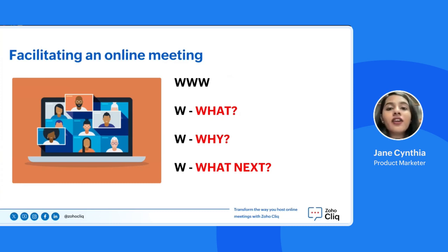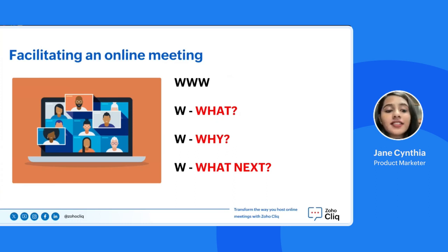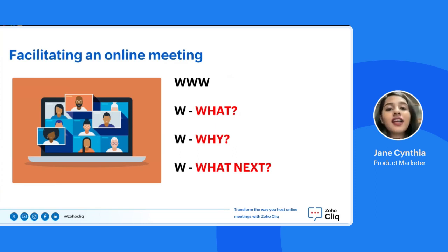Next, Why — context is king. Explain why the discussed topics are crucial. This provides participants with a deeper understanding and can ignite a more passionate and purpose-driven discussion. And What Next — before wrapping up, always address the next steps: who is responsible for what, and what are the deadlines? This ensures that every participant knows their responsibility and the path forward is clear. This format not only helps streamline the discussion but also ensures that every participant remains engaged and the goals of the meeting are met.